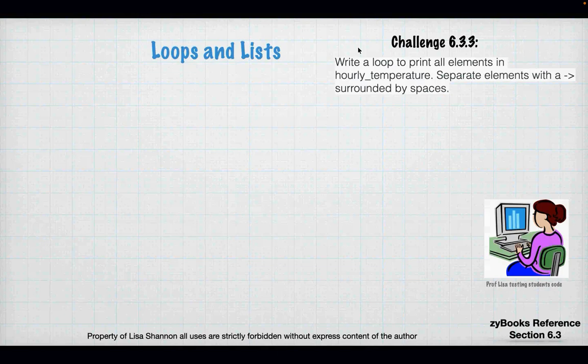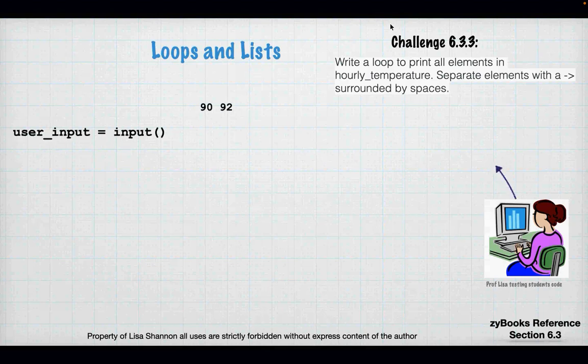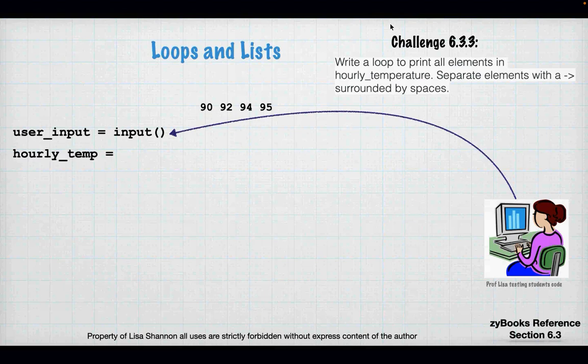Loops and lists: for loops were made for lists. For challenge 6.3.3, write a loop to print all elements in 'hourly_temp', separating elements with a little arrow — a dash and greater-than surrounded by spaces. We get user input — 90, 92, 94, 95 — and split it. There's a pattern here: input a string and split it into a list.